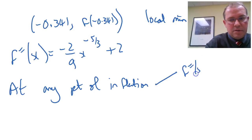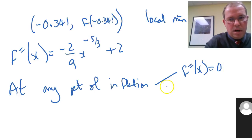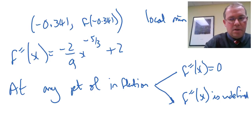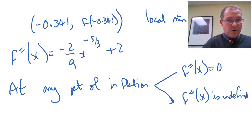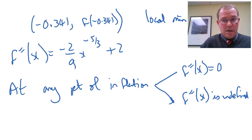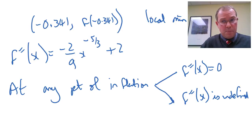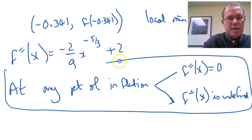Either the second derivative is equal to zero, or the second derivative is undefined. But be careful — it doesn't go backwards. If the second derivative is zero, that doesn't mean it's a point of inflection. Think of y equals x to the power four: its second derivative is 12x squared, which is zero at zero, but y equals x to the power four has a minimum. So if the second derivative is zero, it could be a local maximum, a local minimum, or a point of inflection. But if it is a point of inflection, then one of these two things must be true.